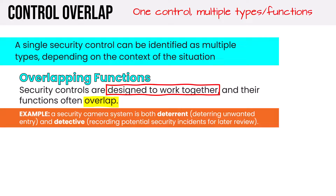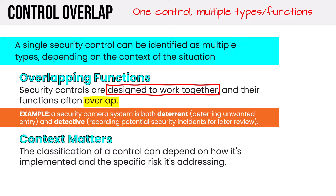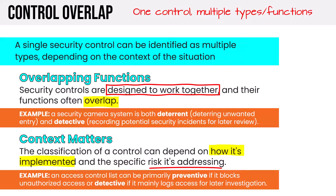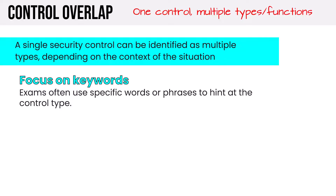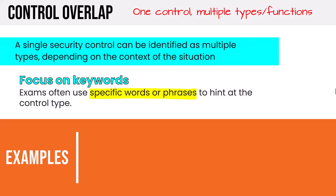For example, a security camera system is both deterrent — it deters unwanted entry — and detective, as it records potential security incidents for later review if the deterrent function doesn't work. Context matters: the classification of a control depends on how it's implemented and the specific risk it's addressing. An access control list can be primarily preventive if it blocks unauthorized access, or detective if it mainly logs access for later investigation. For instance, if an ACL granted access to a file repository but someone deleted sensitive data, the activity was logged and can be investigated later.